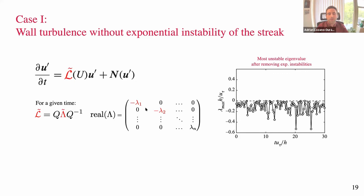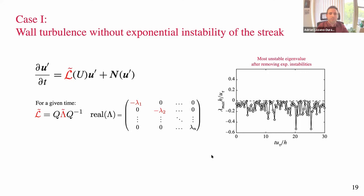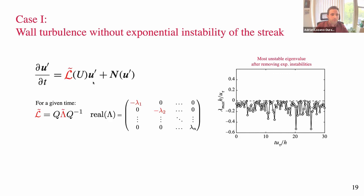Question: in all these simulations, was the nonlinear term N playing any role? Because of the flow decomposition, the nonlinear term only redistributes energy — it does not add energy to the system. But it is important in that it scatters the fluctuations, which then feed back to L̃. Without this nonlinear redistribution, the flow laminarizes. So the nonlinear term is necessary for scattering but not as an energy source.